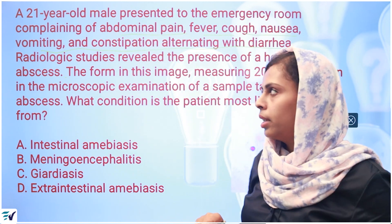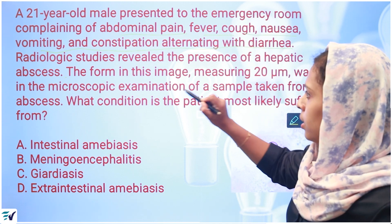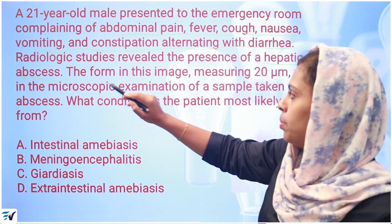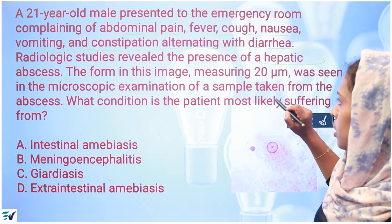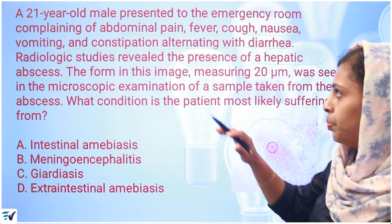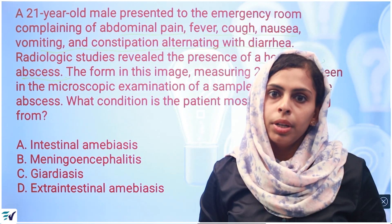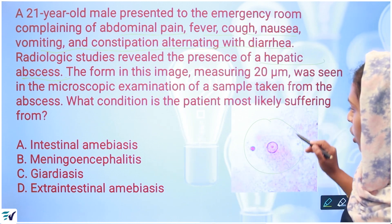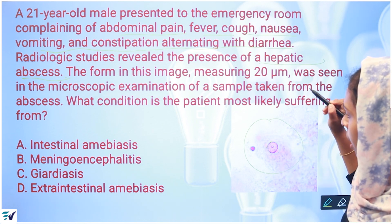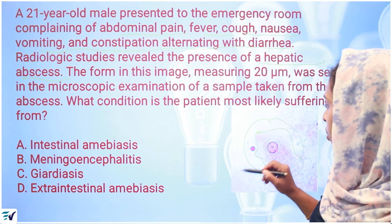There is an intestinal infection along with a hepatic abscess. We need to detect the organism in the specimen. The structure seen shows dense, fine karyosomes and a nucleus. This is an amoebic structure.